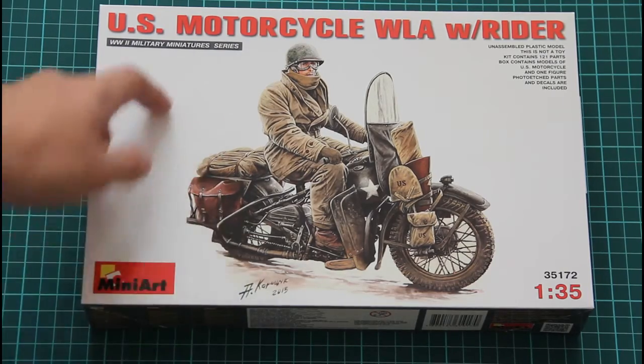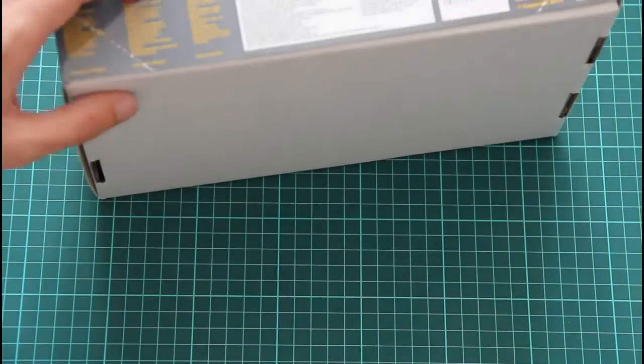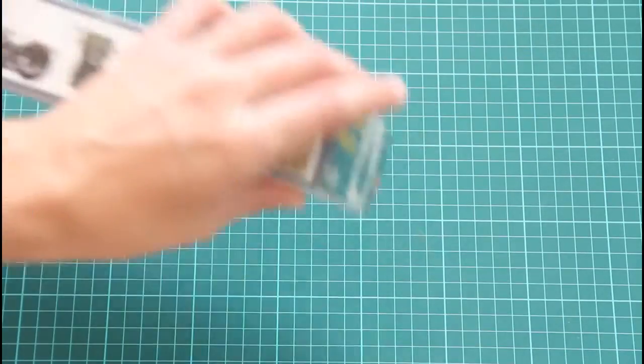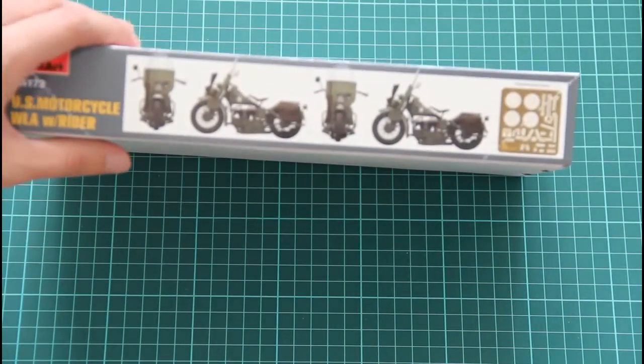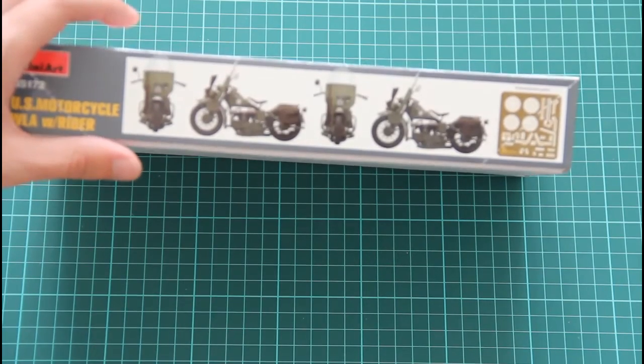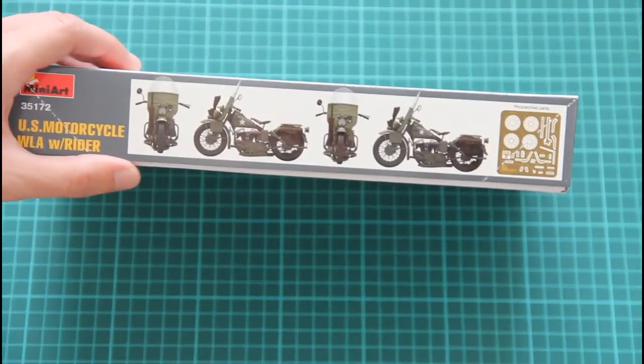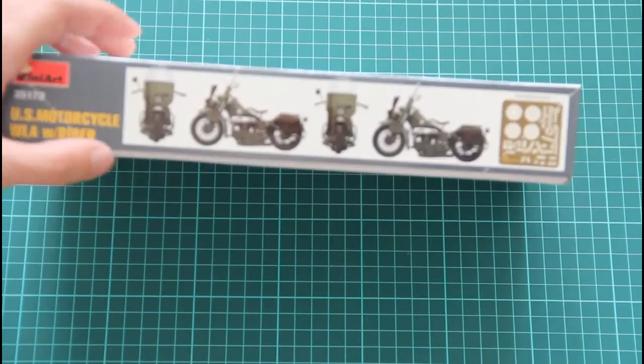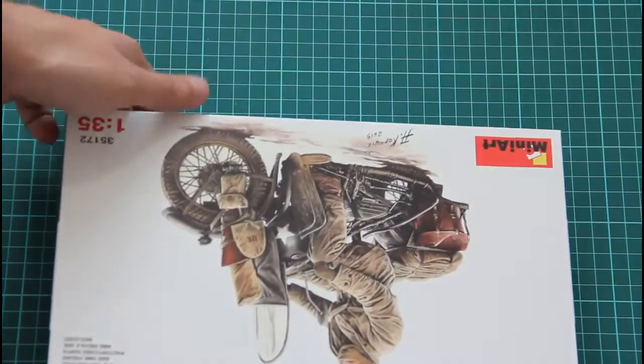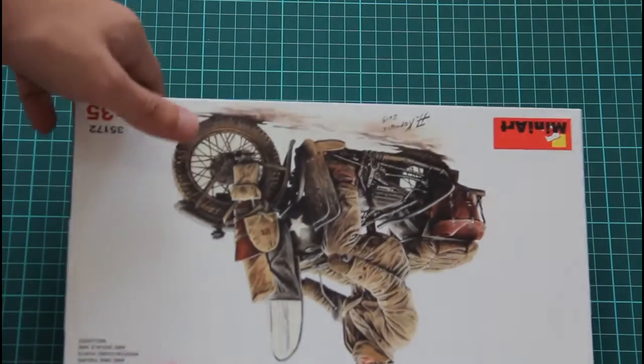We have this nice box art on the front side, then we have some safety information and assembled views or possible marking options for this bike. I will focus the camera so that you can see. This is a top-opening box, just give me a second to open it.